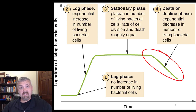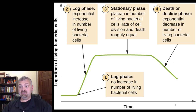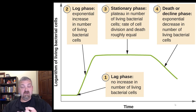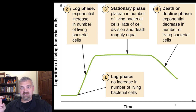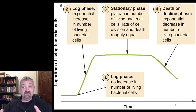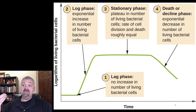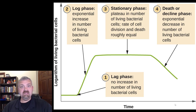Then we reach the death or decline phase, where you'll see a logarithmic decline in population. The population is going to die once you're out of space, out of food, with too many waste products — it's going to die almost as fast as it was born. Both the log phase and the death phase see logarithmic changes in population, and in a relatively short time the entire population can disappear, or just a handful will be left. For some organisms this process takes much longer.